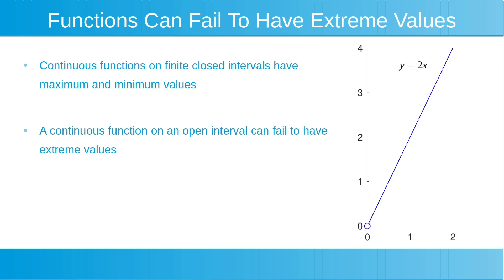Similarly, shown to the right is a plot of the continuous function y is equal to 2x, on a semi-open interval from x is equal to 0 to x is equal to 2. This semi-open interval consists of all points between x is equal to 0 and x is equal to 2, including the point at x is equal to 2, but not including the point at x is equal to 0. This continuous function on this semi-open interval has an absolute maximum value of 4 at the point where x is equal to 2, but it does not have an absolute minimum value.